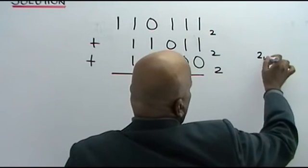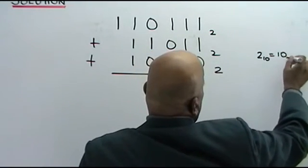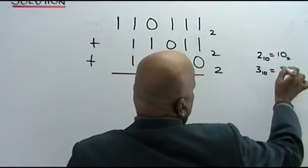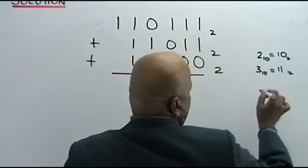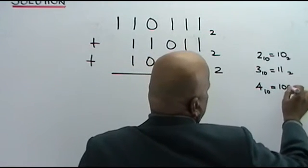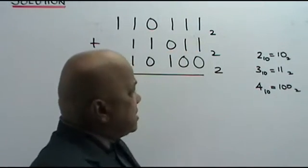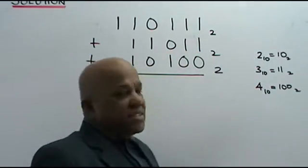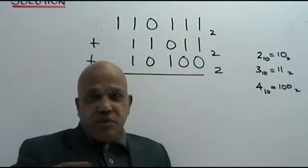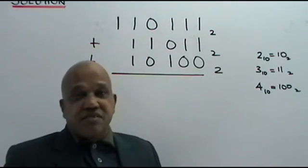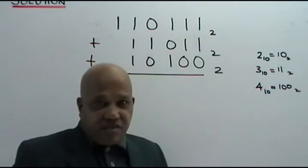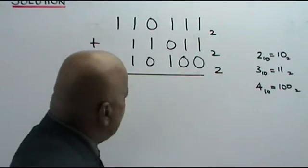2 base 10 is 10 in base 2. 3 base 10 is 11 in base 2. 4 base 10 is 100 in base 2. Now, if you memorize this, it will help you to do the questions fast. You can really do it super fast if you are familiar with all this.